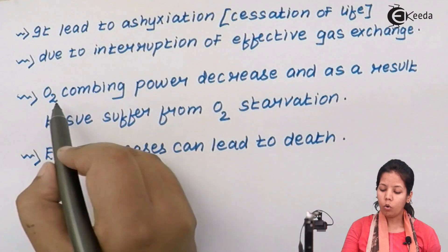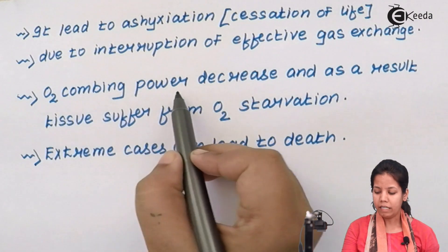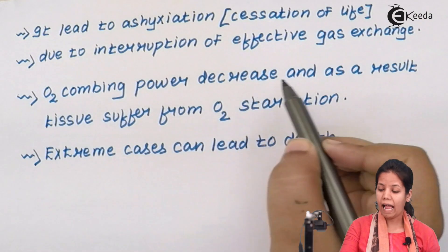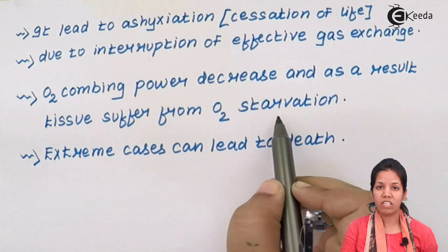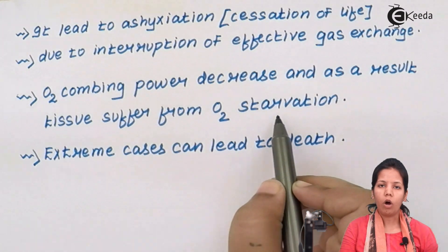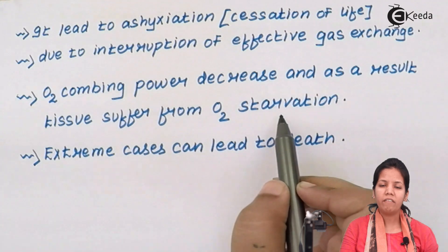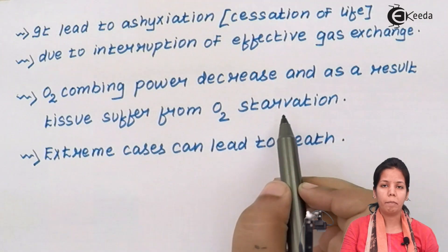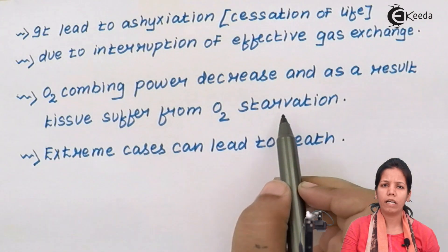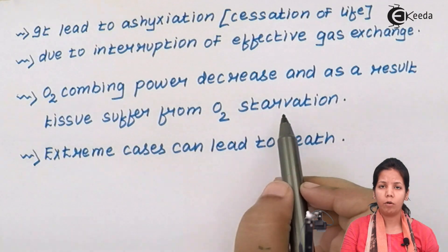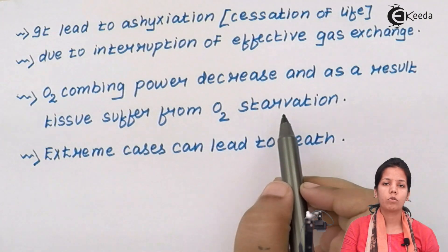The O2 combining power of hemoglobin decreases, and as a result, tissues suffer from oxygen starvation. Oxygen is essential for every tissue to carry out mitosis, meiosis, and every bodily function — exchange, anabolism, catabolism. Oxygen is the primary source of energy for all these processes.